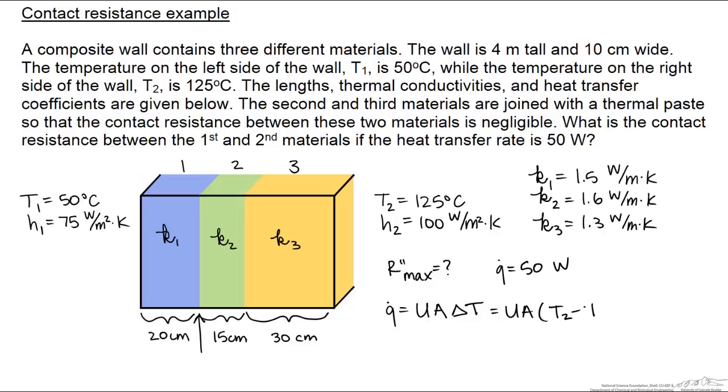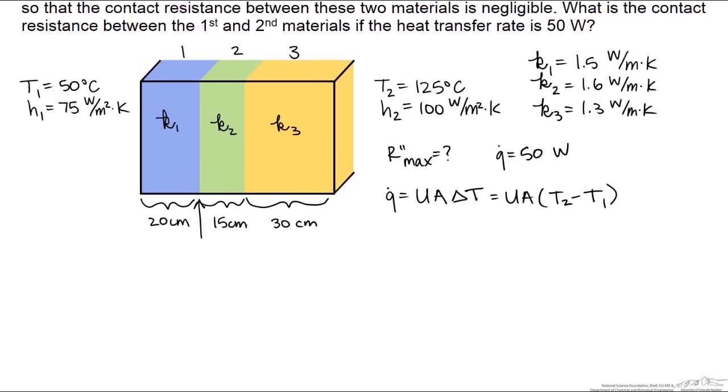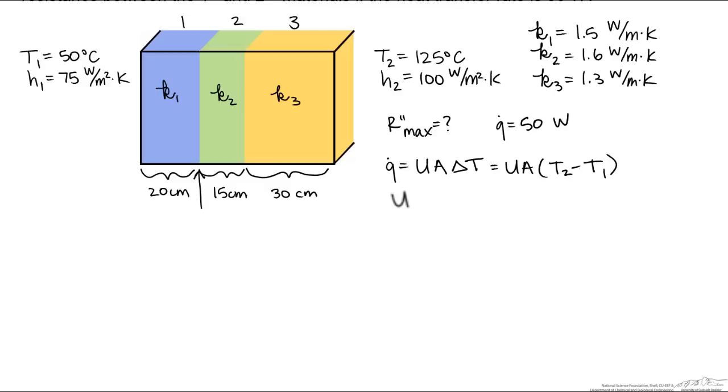So how do we find the contact resistance? It is part of the calculation for U, because this overall heat transfer coefficient is equal to the sum of all the thermal resistances raised to the minus 1. So we can calculate this U.